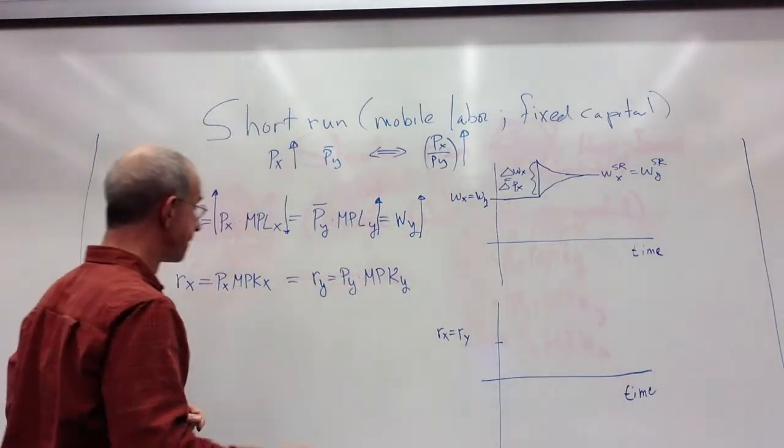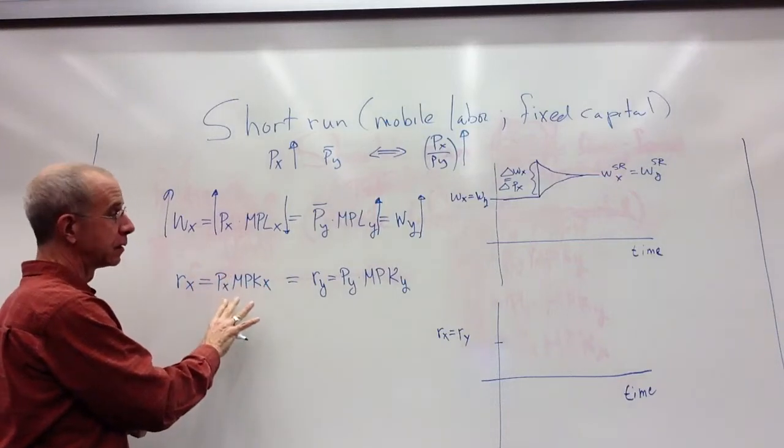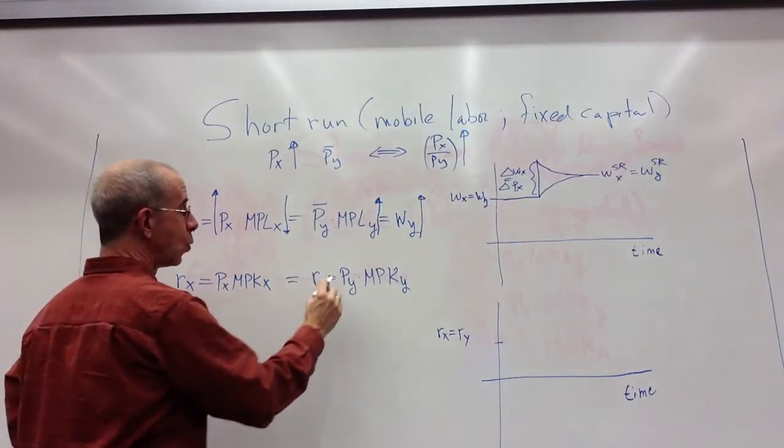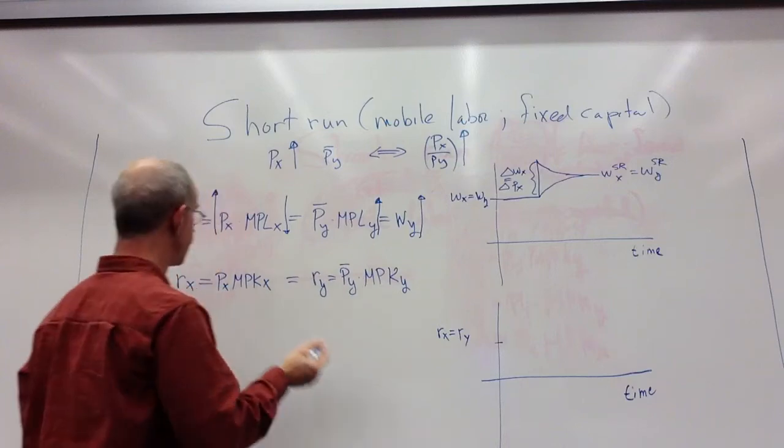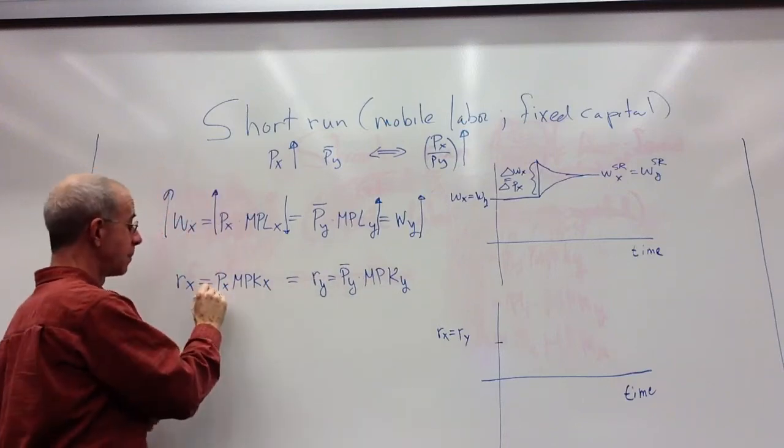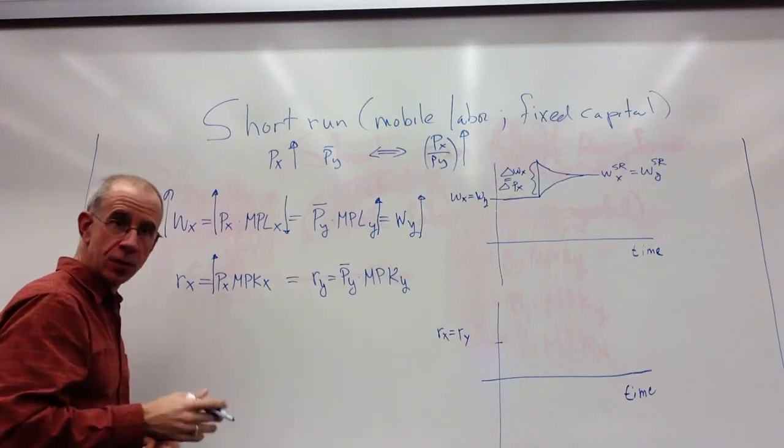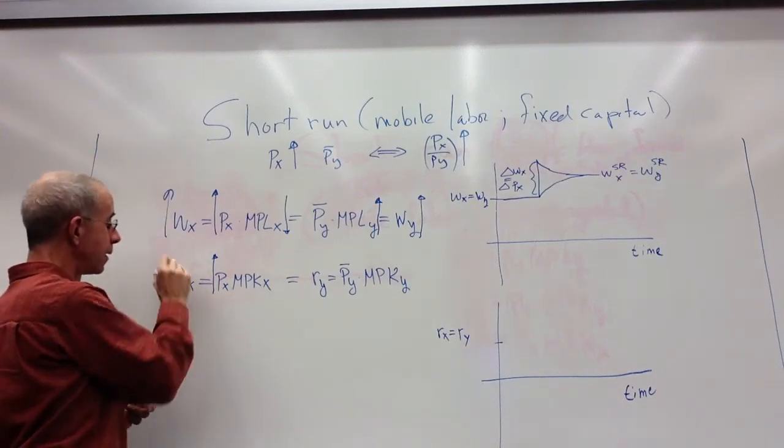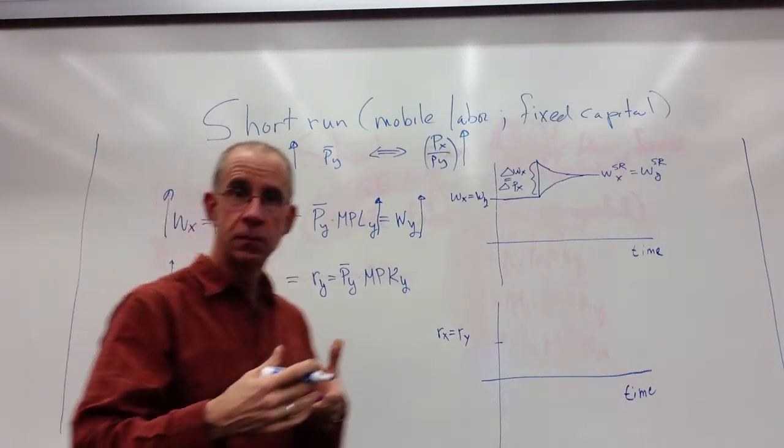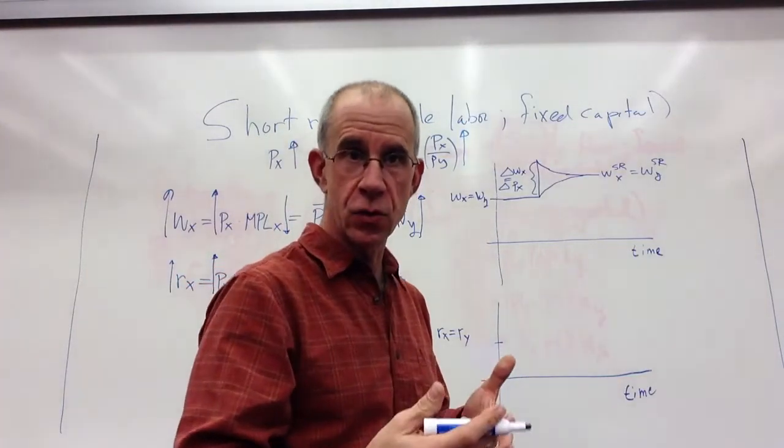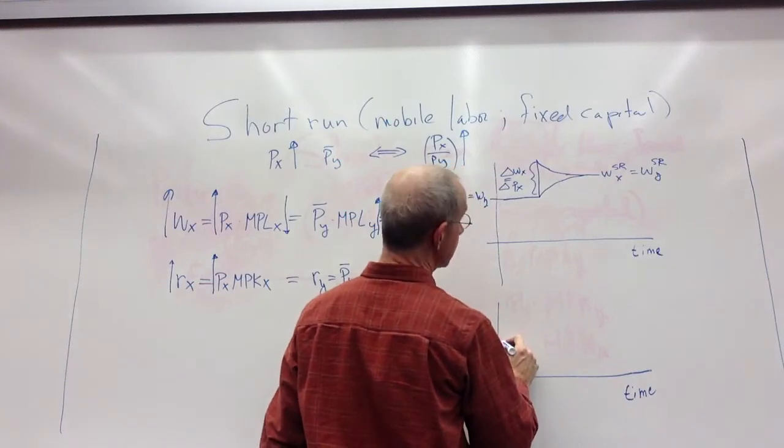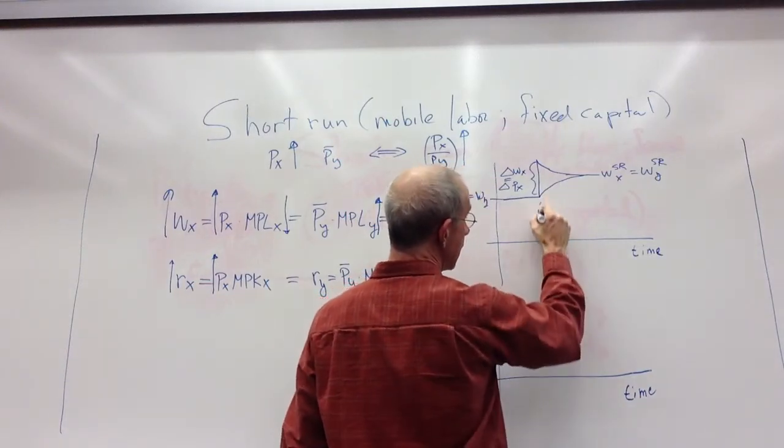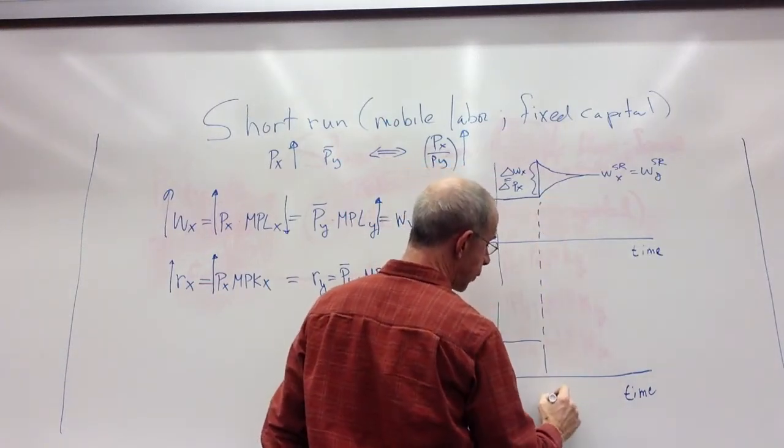So that's the labor side. On the capital side, we start out. The price of Y is the same. It stays the same. The price of X has gone up, which is going to tend to bid up the payment to capital in the very short run. It's going along and then suddenly there's this price change.